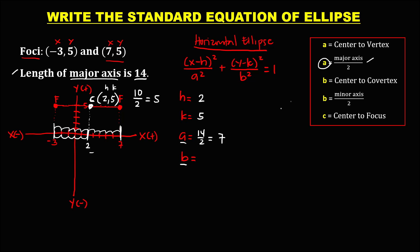To solve for b, the formula uses the center and co-vertex. Since there is no given co-vertex, we cannot use that formula. Instead, we use c, which is the distance from the center to the focus. So c is equal to 5.